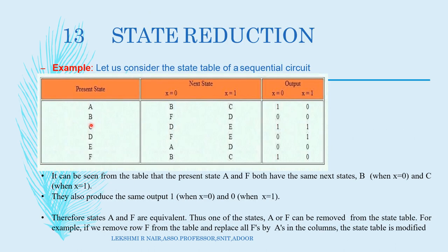Here is an example of state reduction. We can see a state table. By observing this table, can you see any similarity in any states? For present state a, the next state is b when x equal to 0, next state is c when x equal to 1, output is 1 for x equal to 0 and output is 0 for x equal to 1. For state f, x equal to 0 gives next state b, x equal to 1 gives next state c, and the outputs are 1 and 0 respectively. So a and f are equivalent.